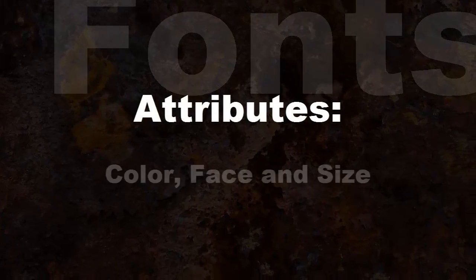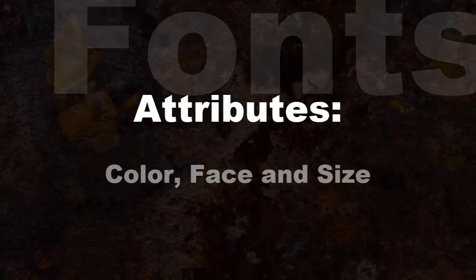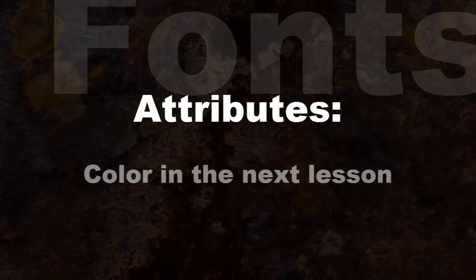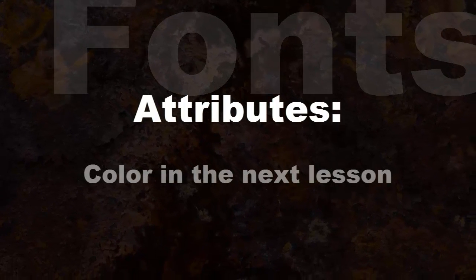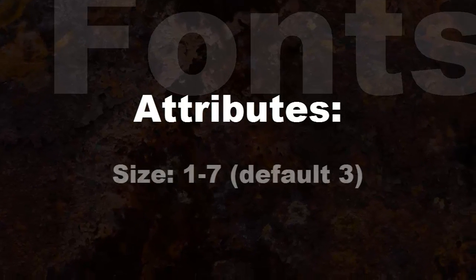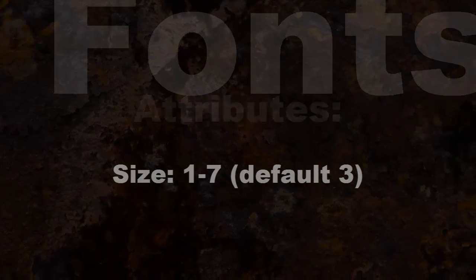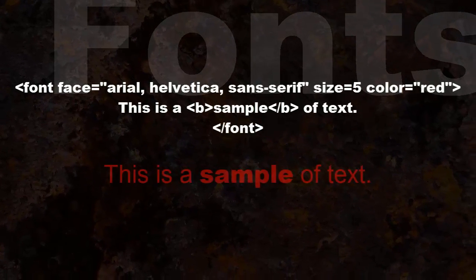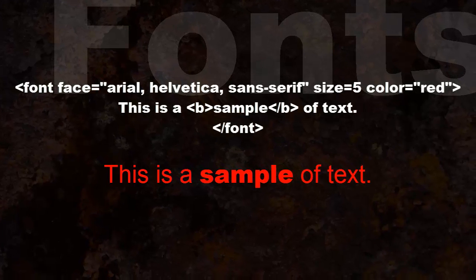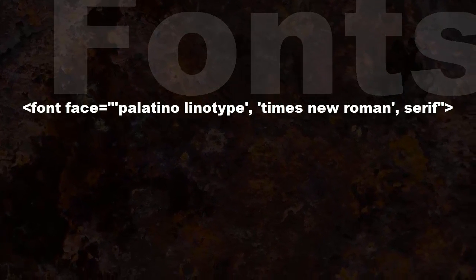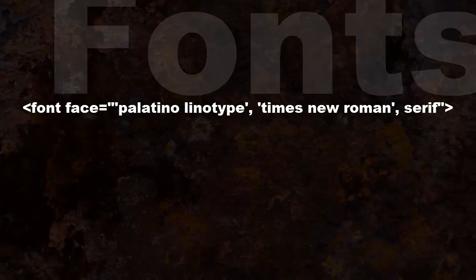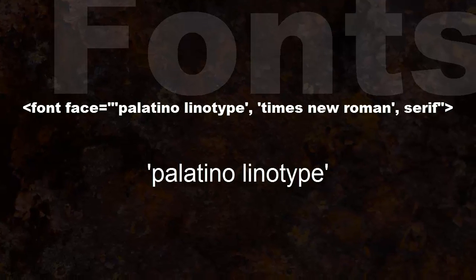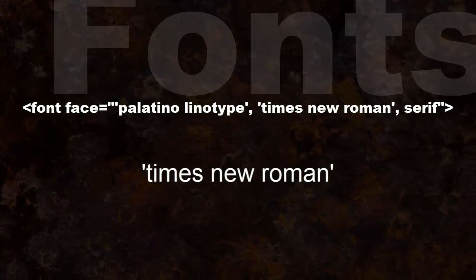The attributes for the font tag are color, face, and size. We will be going over the use of color in the next lesson, though we will use a little color here. Size is a number from 1 to 7; the browser default is 3. The following is an example of font tag use. If a font name contains a space, it needs to be placed in quotes. Since the font names are already in double quotes, you need to enclose the two-part font name in single quotes.